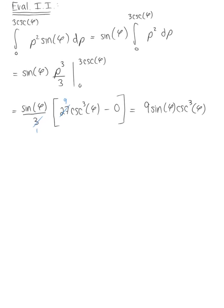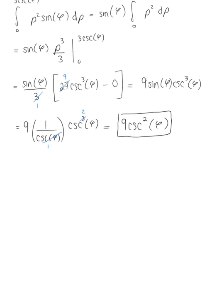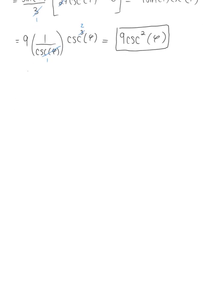Using trig identities, we can rewrite sine of phi as 1 over cosecant of phi, multiplied by cosecant cubed of phi. The cosecant in the denominator cancels one of the cosecants in the numerator, leaving us with 9 cosecant squared of phi. That's our simplified antiderivative — woohoo!